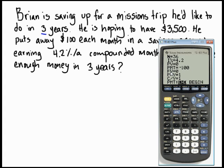FV stands for future value, and we don't know what that's going to be — we're hoping he's going to get his $3,500. So we'll leave that at zero for now. Payments per year: he's doing it every month, so that's going to be 12 per year. And compounds per year are also 12, because it's compounded monthly.